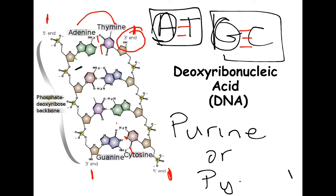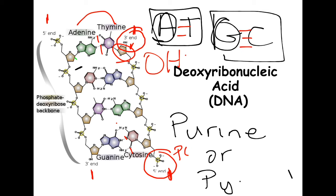On the five prime end, we have a phosphate group sticking out. The three prime end refers to the third carbon of the deoxyribose where that hydroxyl group sticks out, whereas the five prime end is on the fifth carbon of the sugar where the phosphate group is present.